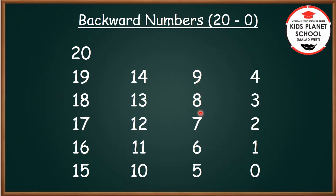9, 8, 7, 6, 5, 4, 3, 2, 1, 0. So children, today we have learned how to write backward numbers from 20 to 0.